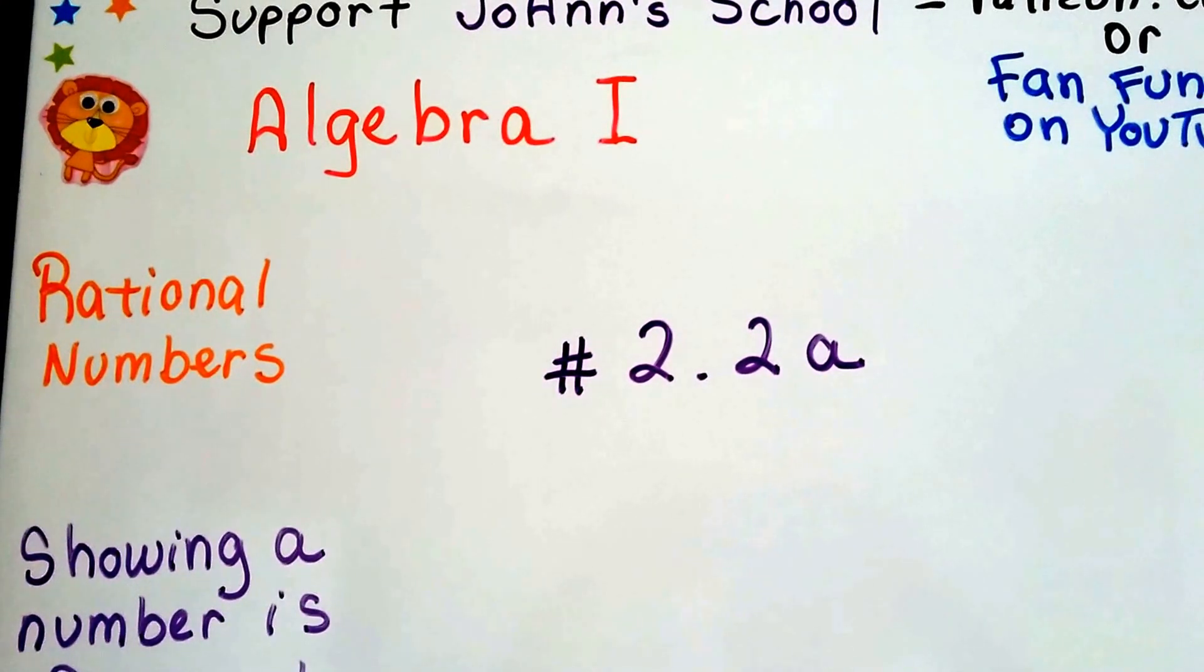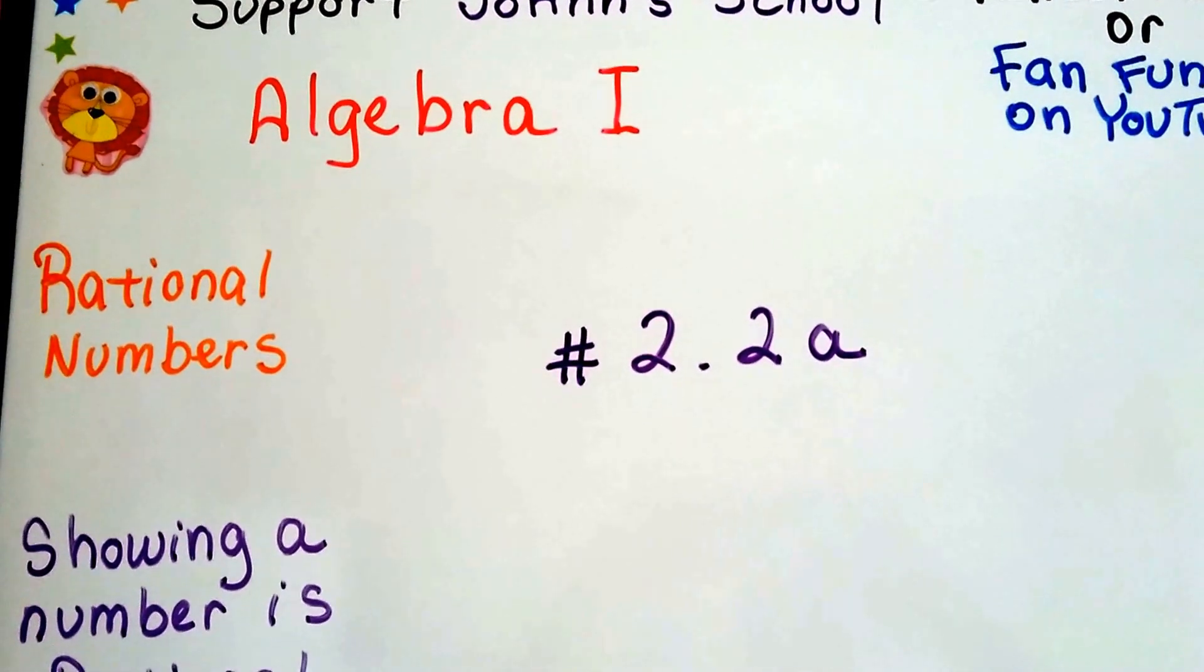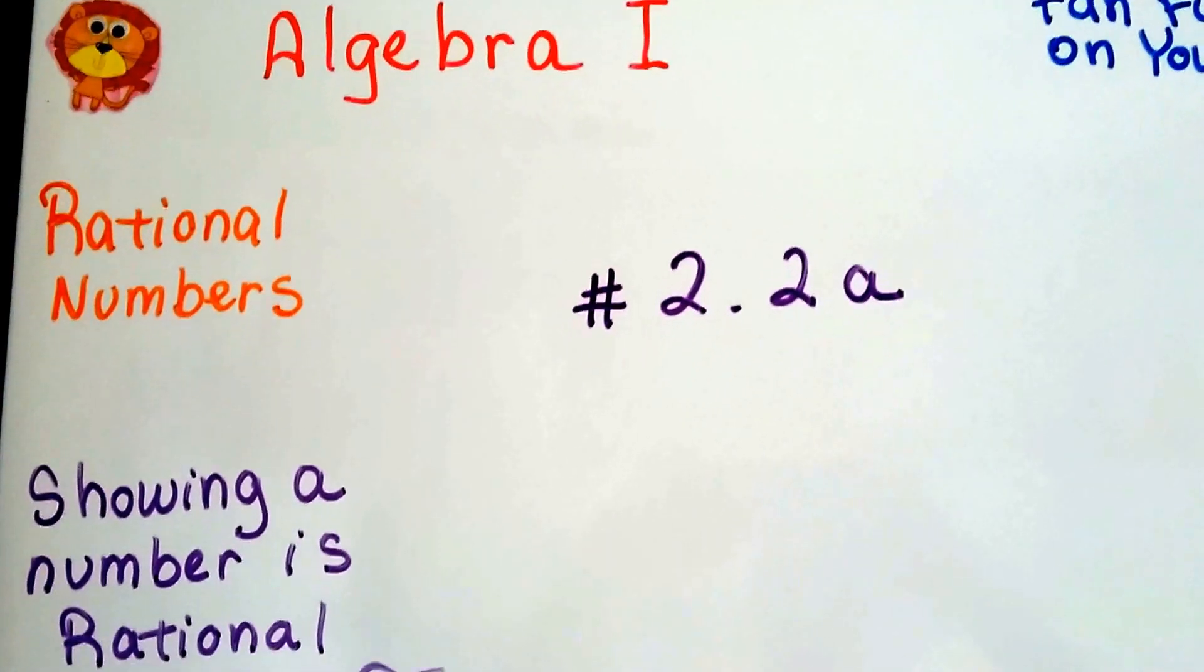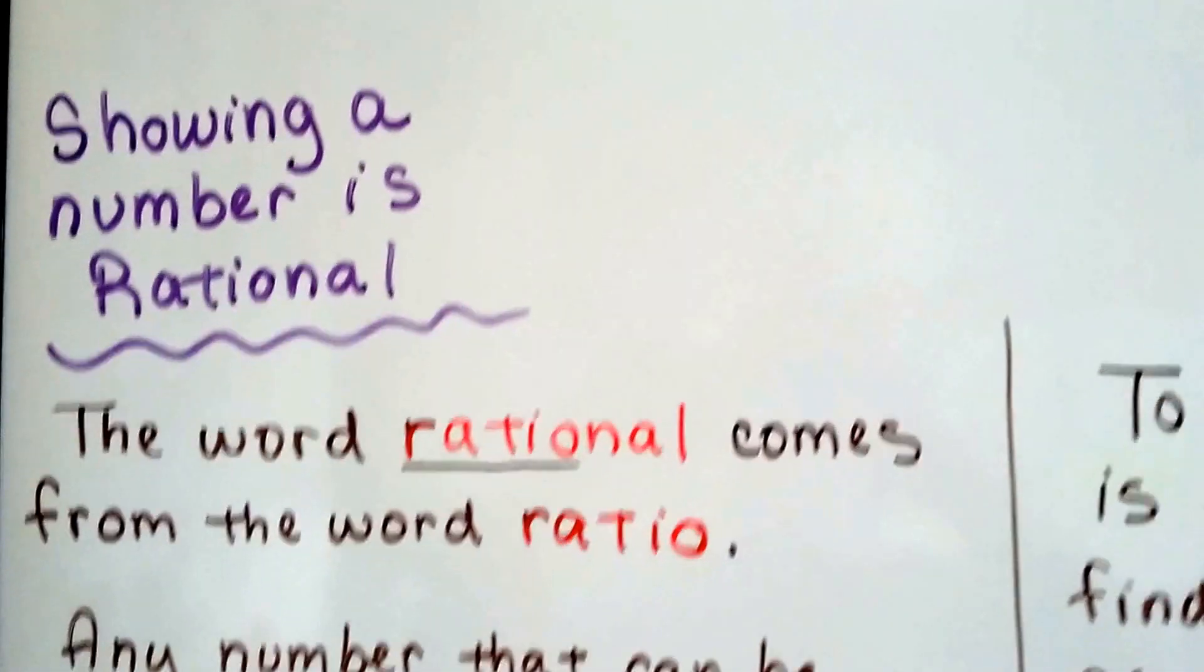We're talking about rational numbers in this unit. Algebra 1, number 2.2a, showing a number is rational.